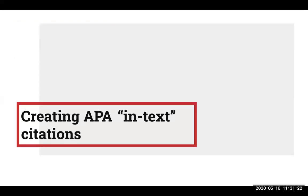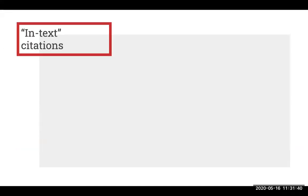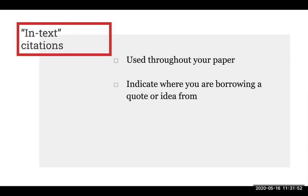So far we've discussed why and when to use citations and what APA style is. Now let's take a look at how to create citations following APA style. We'll start with creating what are called in-text citations. In-text citations are used throughout your paper. They are like brief, abbreviated pieces of information sprinkled throughout your paper. The information in an in-text citation indicates where you are borrowing a quote or idea from, so that someone reading your paper knows where an idea came from as they're reading.